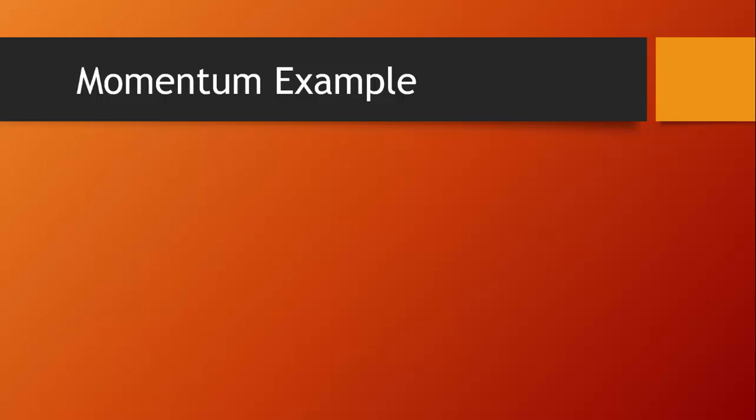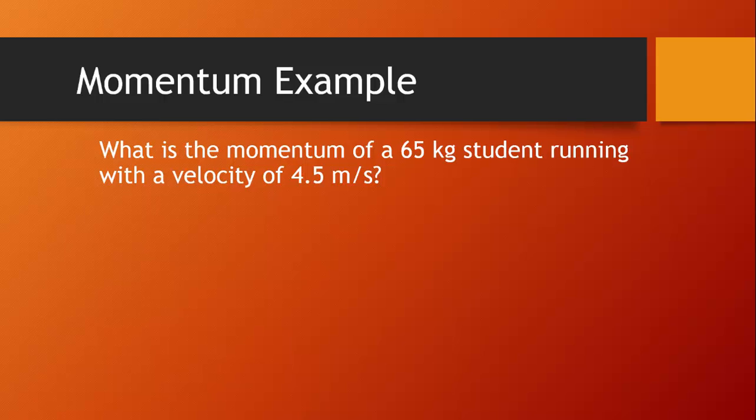Here's an example of a simple momentum problem. What is the momentum of a 65 kilogram student running with a velocity of 4.5 meters per second? Well, p equals mv. Plug in the mass and the velocity. We find that the momentum of this student is 292.5 kilogram meters per second.